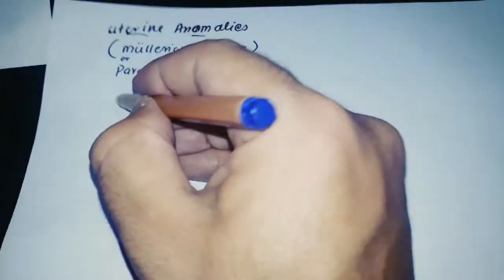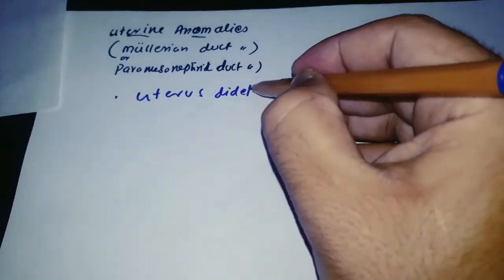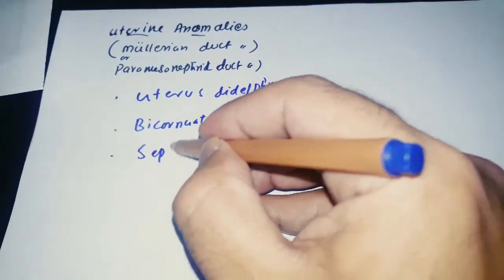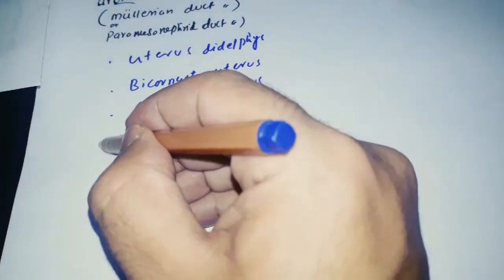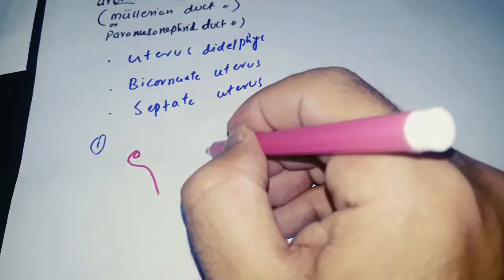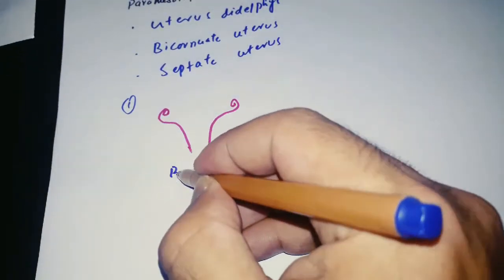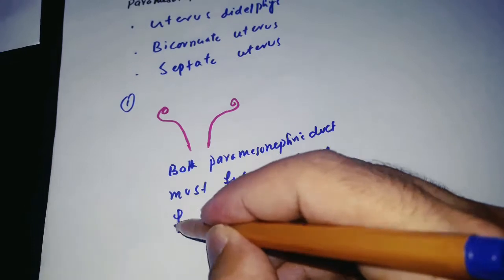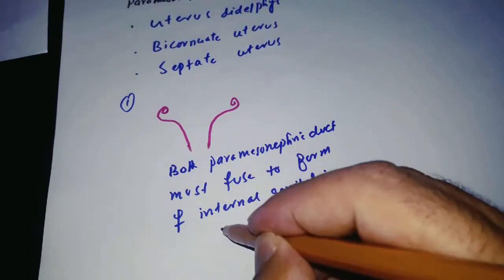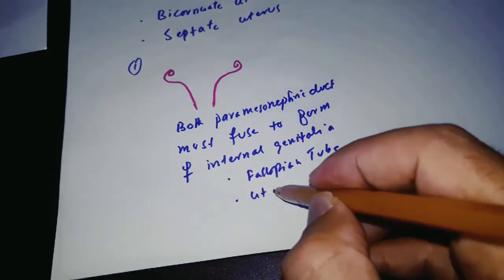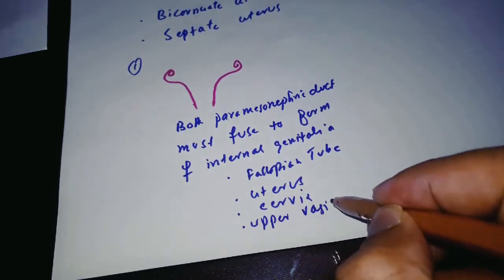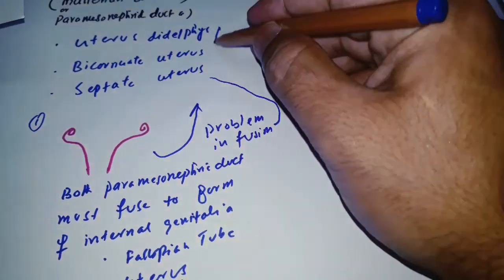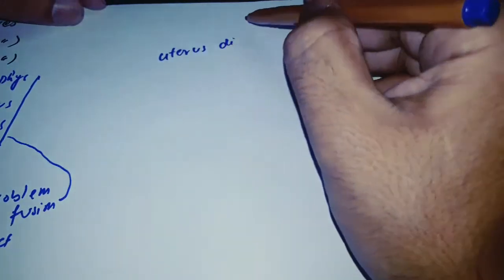Uterine anomalies — the Müllerian duct anomalies, also called paramesonephric duct anomalies. The three main ones are: uterus didelphys, bicornuate uterus, and septate uterus. The paramesonephric duct, which is called the Müllerian duct — both of these ducts must fuse with each other to form the female internal genitalia. If they don't fuse, uterine anomalies will occur, forming structures like the fallopian tubes, uterus, cervix, and upper one-third of the vagina.